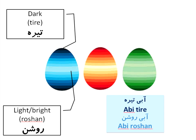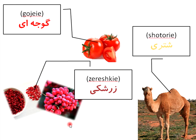Sometimes we use the name of a thing or animal for saying its color, and everybody understands it. For example, camel in Persian is shotor, and when I want to say the color of a camel, I can say shotori. Or, for example, tomato is red, but if the color you're talking about is a special kind of red like tomato, you can say goje — goje in Persian means tomato.